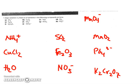So NH4: hydrogen is going to have the priority here, it's going to be plus one. Overall it's a plus one charge, so if I've got plus four for my hydrogen, that means I need a minus three for my nitrogen to balance this.